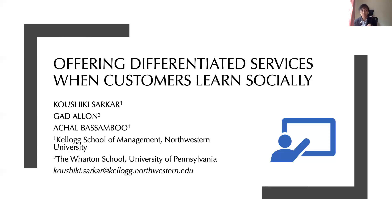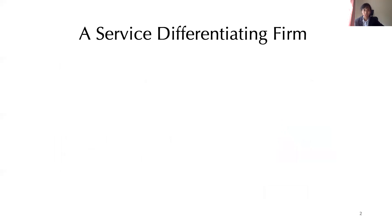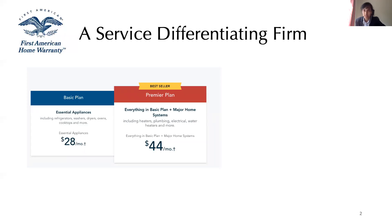Let me give you a quick example. Let's consider a typical service-differentiating firm: First American Home Warranty. A home warranty firm operates as follows — at the start of every month, you pay them a fee, and every time something breaks down, they come and fix it for you. First American has two service plans: the basic plan priced at $28 a month, which includes repair of all major home appliances, and the significantly more expensive Premier plan, which includes repair of all home appliances as well as major home issues like plumbing.